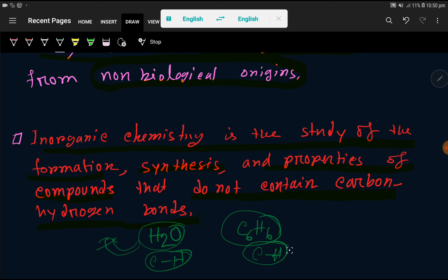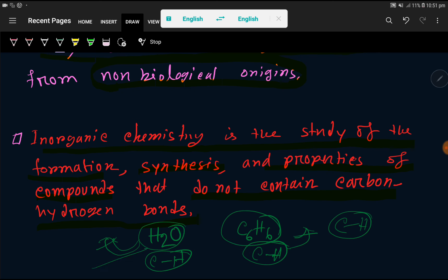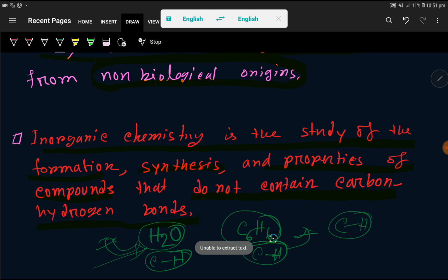Benzene has a carbon-hydrogen bond, so it is a compound of organic chemistry. In summary, organic compounds have carbon-hydrogen bonds, while inorganic chemistry studies inorganic compounds — those without carbon-hydrogen bonds. I hope you have understood what I wanted to explain. Thank you for watching.